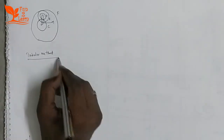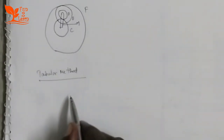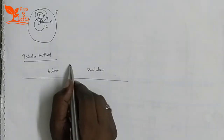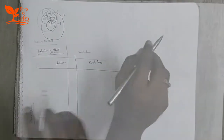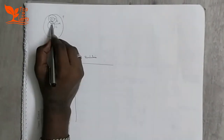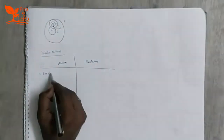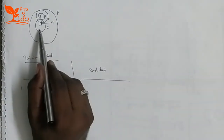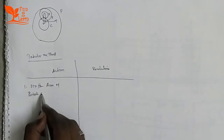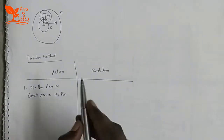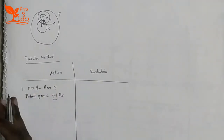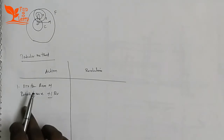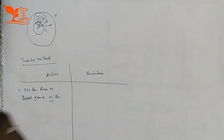We solve this using the tabular method. The table has columns and rows. The procedure is: first, fix the arm M and rotate gear C one revolution in the clockwise direction. This is the first step — arm is fixed, center gear C rotates plus one revolution clockwise.